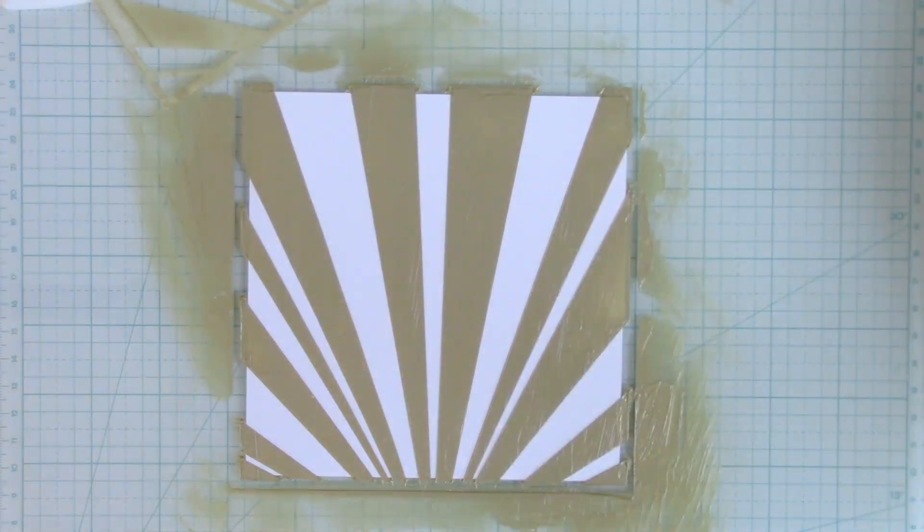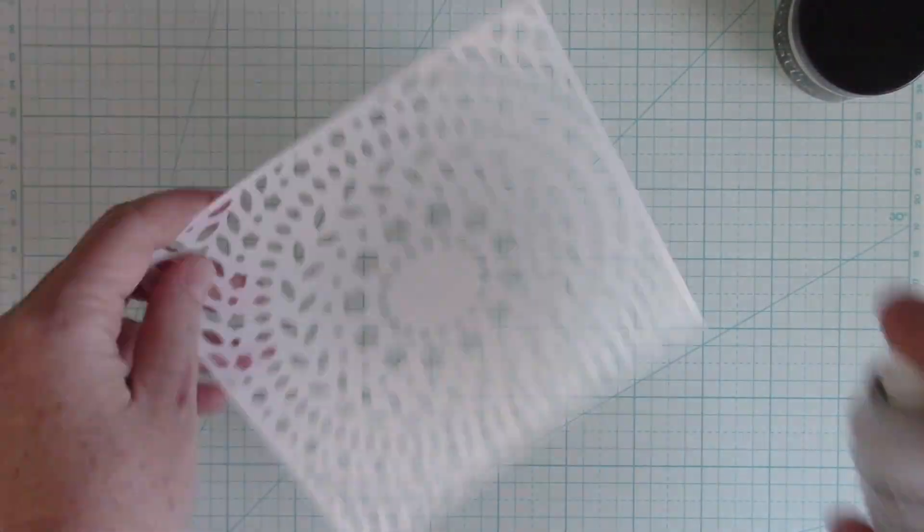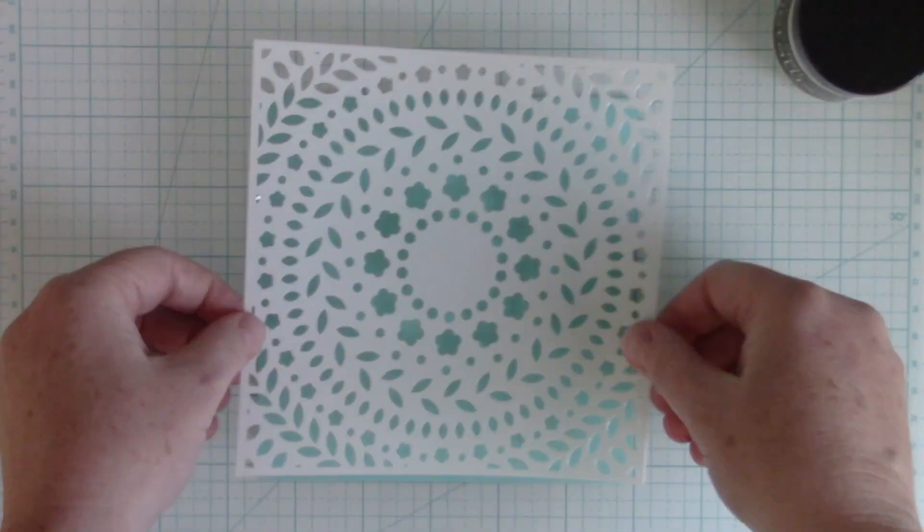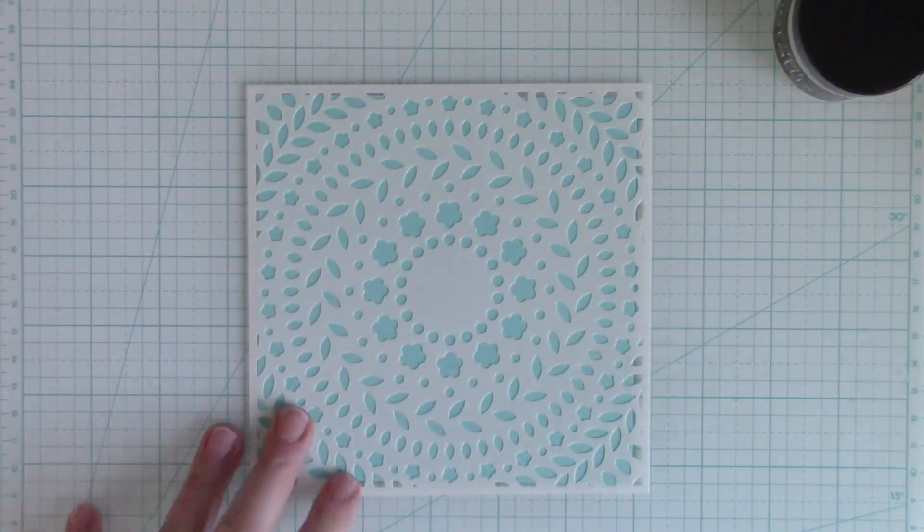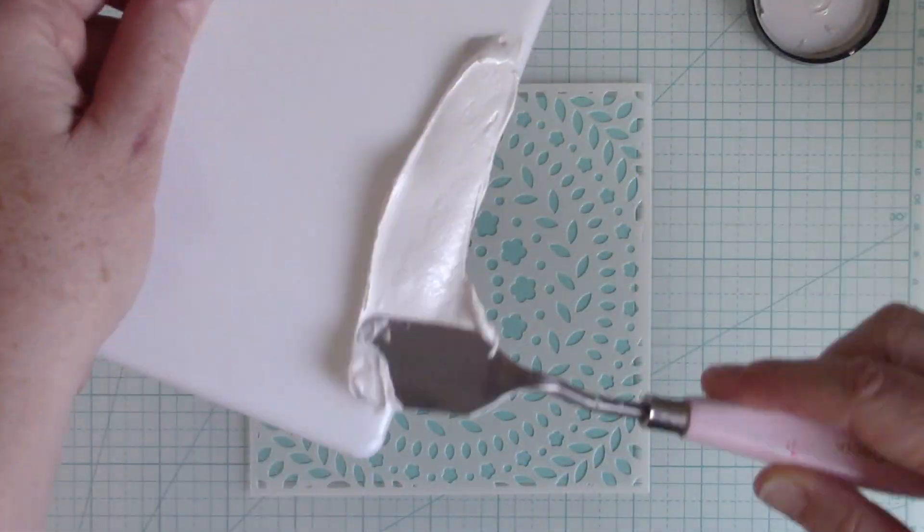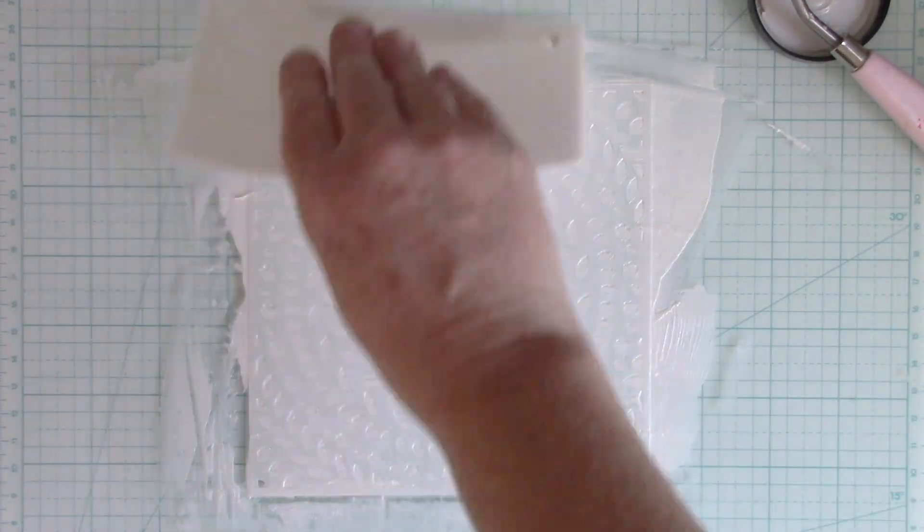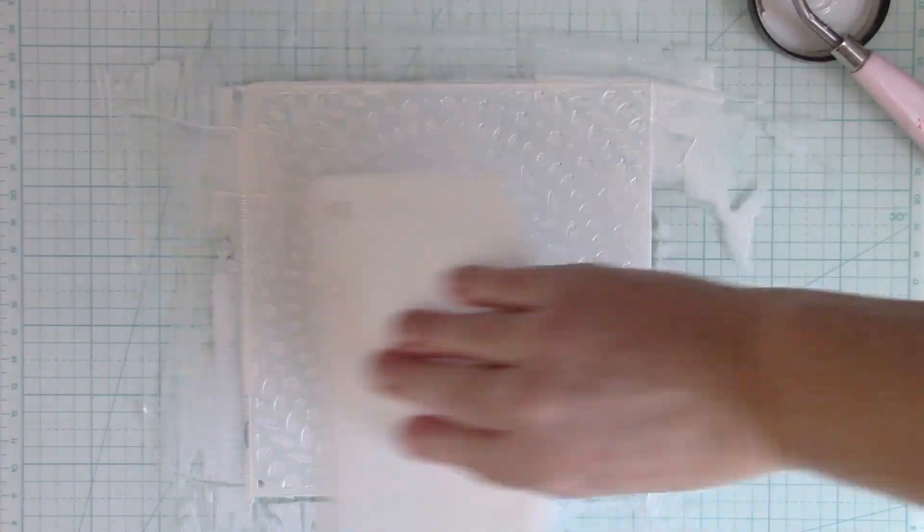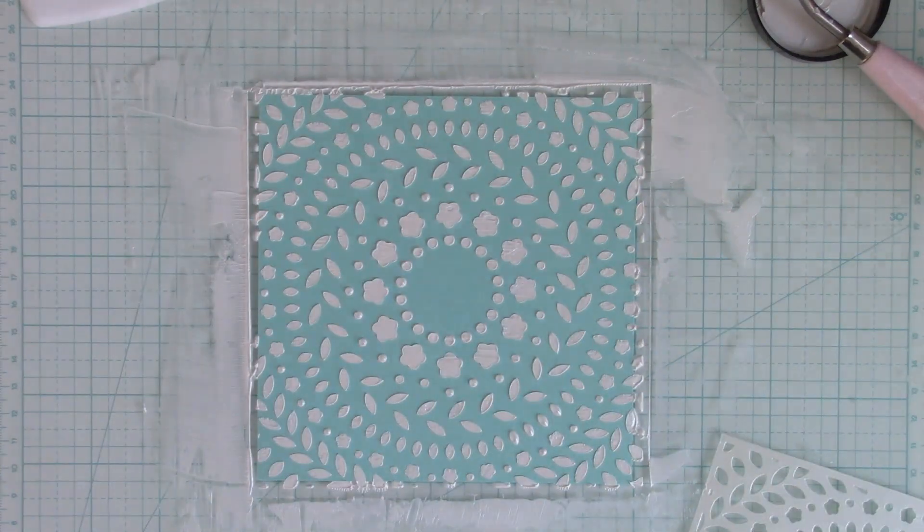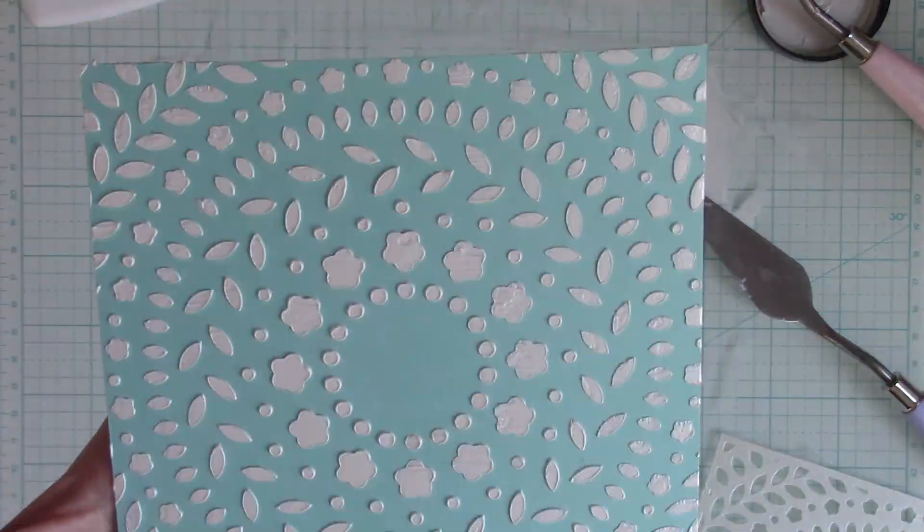The thing is, I don't show the cleanup, but it's really easy to clean up the Metallix Gel off a glass mat. It just wipes up with a baby wipe. The Stencil Pal and anything else, your stencil can be cleaned with some warm soapy water. Just don't let the Metallix dry. This one, I used the Ring of Rosy Stencil and the White Pearl.